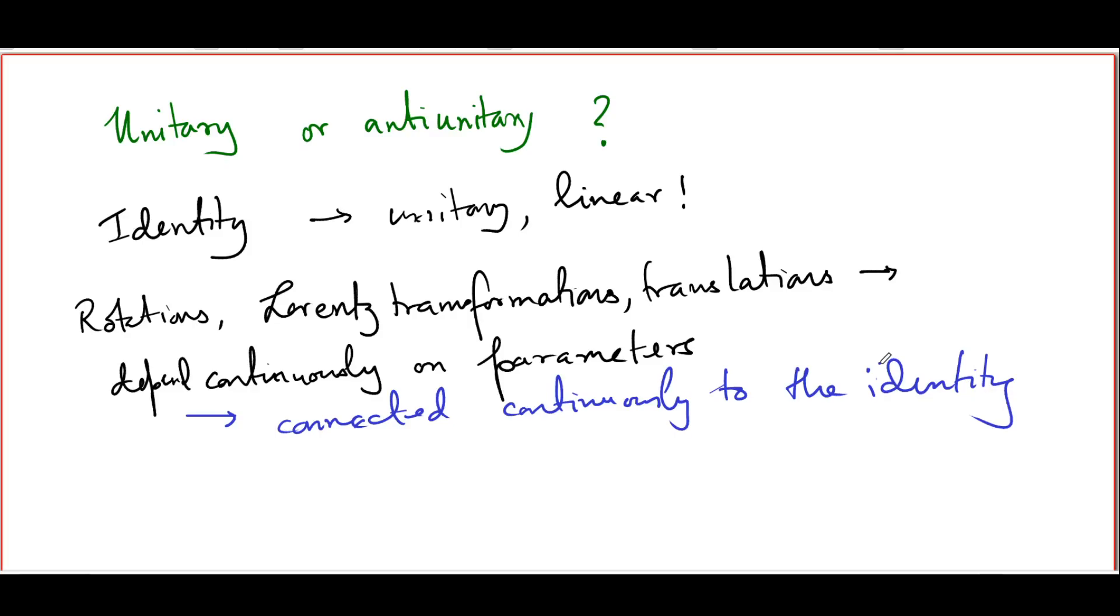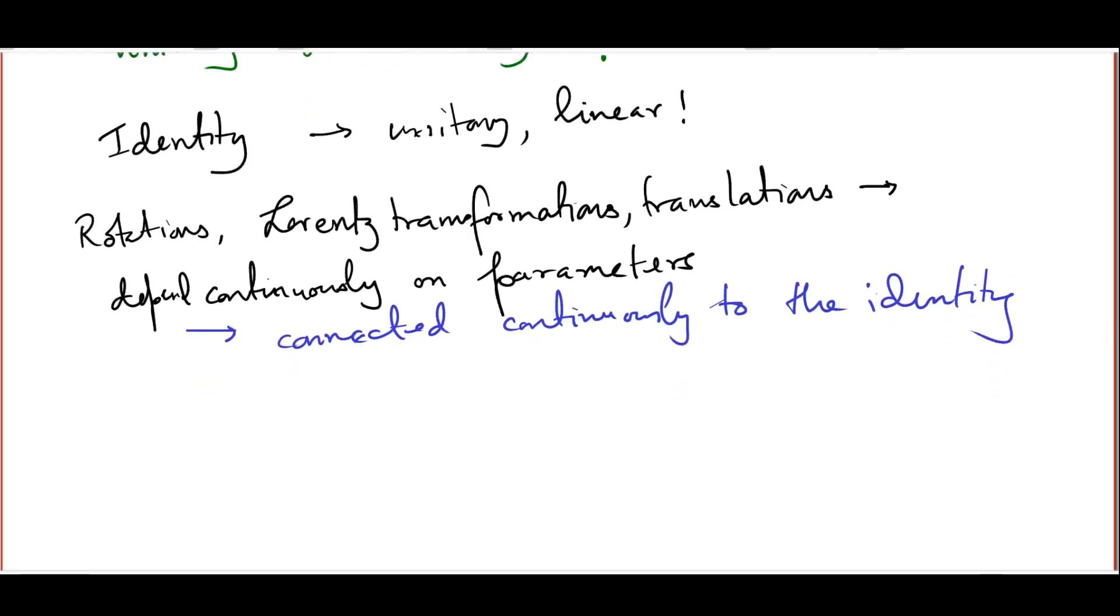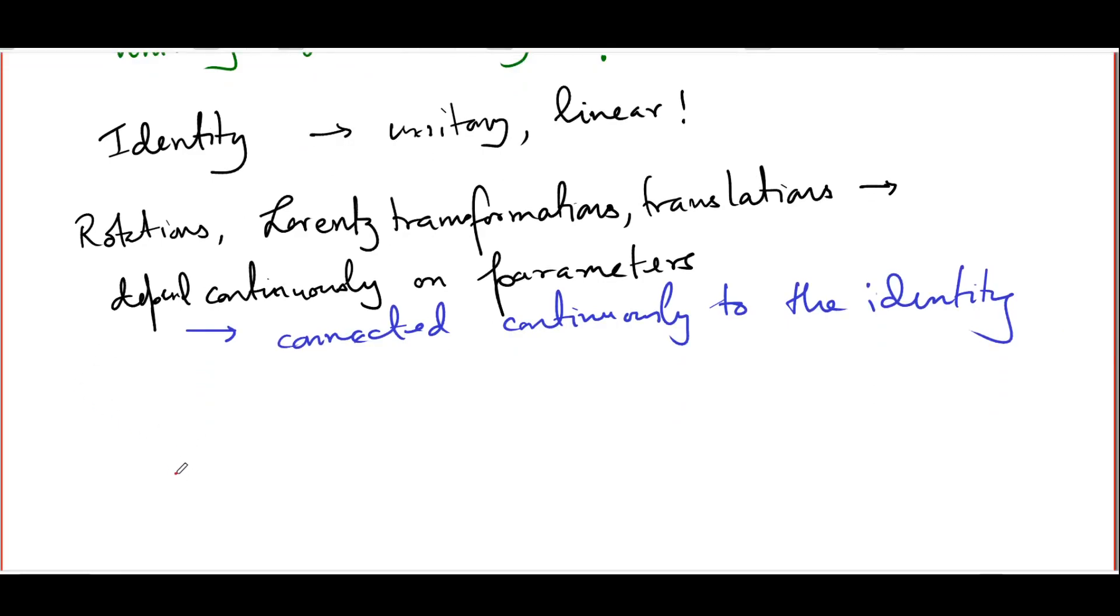Now, one important point that comes to mind in regard to these continuously connected to the identity operators is the following. So you can think of such transformation as being infinitesimally close to the identity. So we can think of a small parameter epsilon which tells you how much the transformation deviates from the identity. And then, for such situations, the operator has to be unitary as we said. And we can easily figure out what its form is going to be.